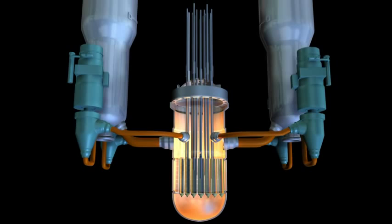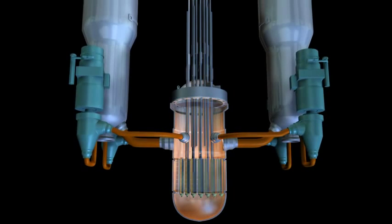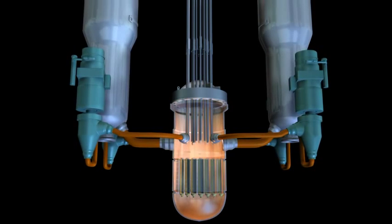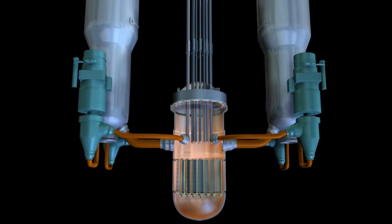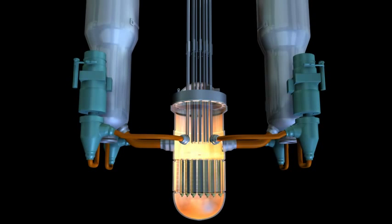Control rods are an essential part of the process and part of the numerous safety systems in the plant. They move up and down in the fuel bundle to control the nuclear reactions and ensure an appropriate temperature within the reactor.